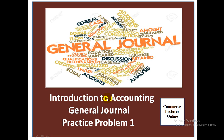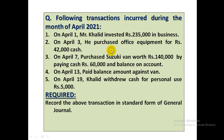Introduction to accounting practice problem number one — Commerce Sector Online. Let's learn how to prepare a journal. The following transactions occurred during April 2021. On April 1, Mr. Khalid invested Rs. 2,35,000 in business. On April 3, he purchased office equipment for cash. On April 7, he purchased a Suzuki van worth Rs. 1,40,000 by paying cash and balance on account. On April 13, he paid the balance amount against the van. On April 19, he withdrew cash for personal use.